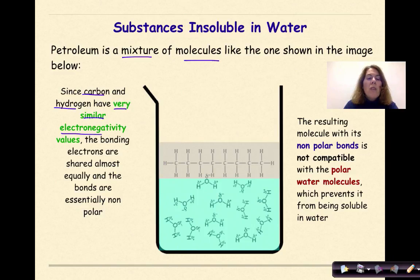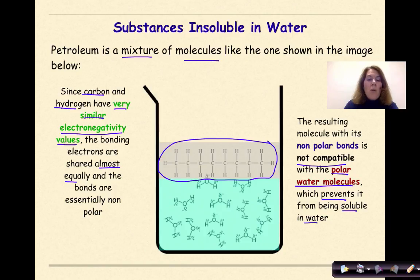Since carbon and hydrogen have very similar electronegativity values, the bonding electrons are shared almost equally and the bonds are essentially non-polar. In general, if we look at this molecule right here, we could say to ourselves definitely that molecule is non-polar as a whole. The resulting molecule with its non-polar bonds is not compatible with the polar water molecules, which prevents it from being soluble in water. This section and this section are not going to mix together because the petroleum is non-polar, the water molecules are polar, and they will not mix due to the difference in the molecular polarity of the molecules.